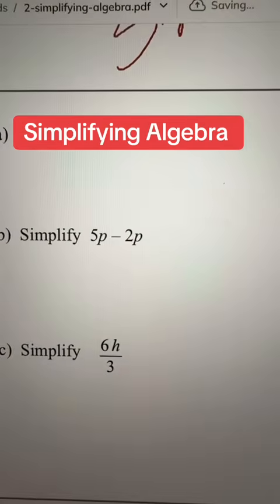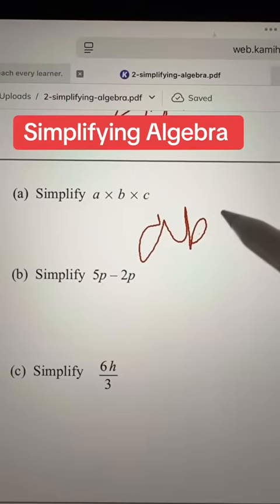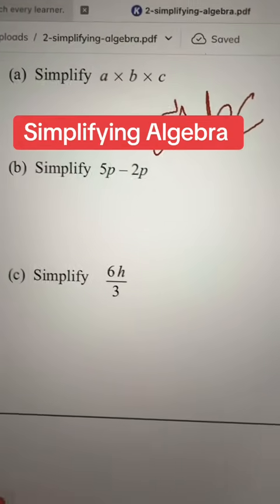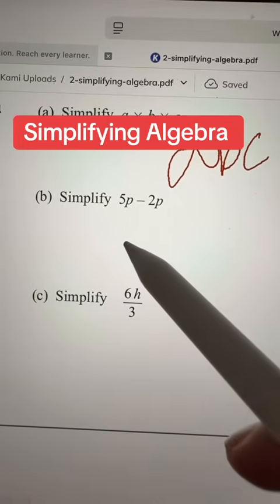Then you have multiplication, a multiplied by b multiplied by c is abc. Then you have 5p minus 2p, that's 3p.